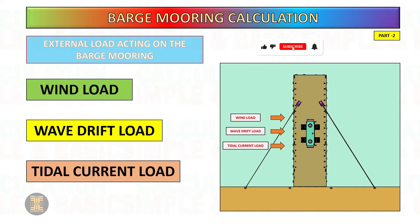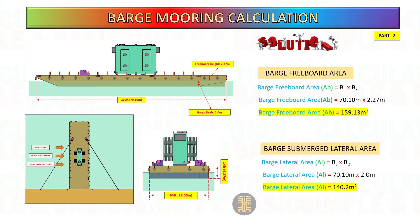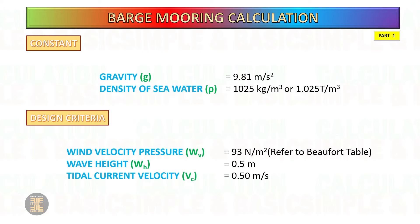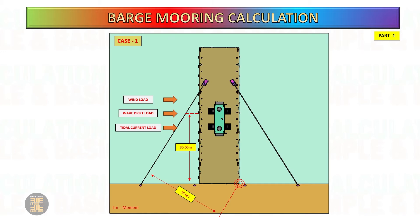Understanding the mooring line's capacity to secure the barge is crucial in order to mitigate the risk of accidents resulting from insufficient mooring line capacity. This is the previous result for part one. For calculation design guidelines, codes and standards, refer to DNV marine operations and marine warranty. In this calculation we need to do the analysis for case one and case two.